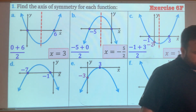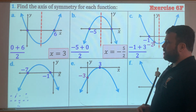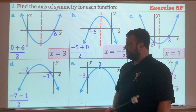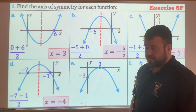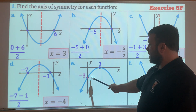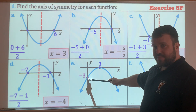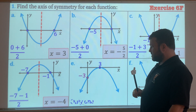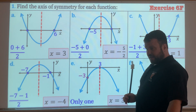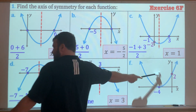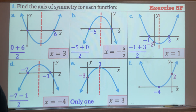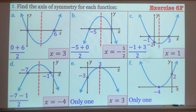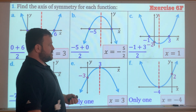For part d: negative 7 plus negative 1 is negative 8, divided by 2 is negative 4, so x equals negative 4. For part e: negative 3 is the y-intercept, so it doesn't matter. There is only one x-intercept because the parabola just touches the axis, so the answer is x equals 3. For part f: the y-intercept of 2 doesn't matter. The only x-intercept is negative 4, so the axis of symmetry is x equals negative 4.